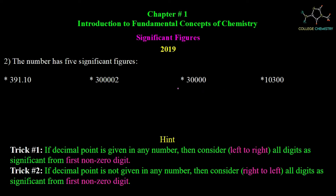Now for question number 2, we check how many significant figures are in the given number. In this number, there is no decimal point. When there is no decimal point, we consider right to left. The first non-zero digit is found, and from there we count. So this number has three significant figures.